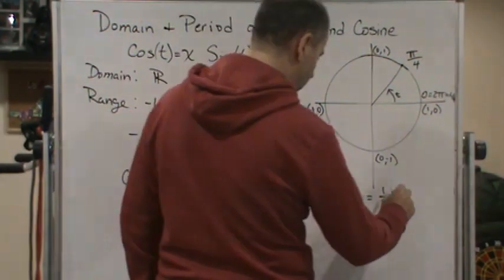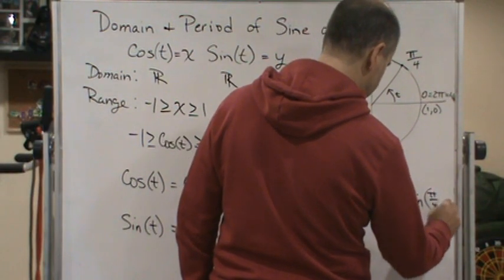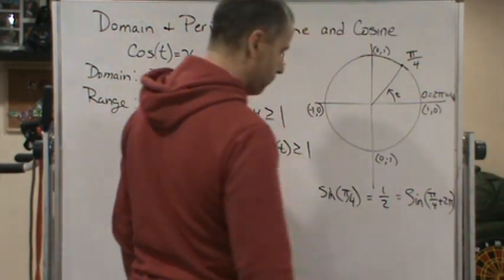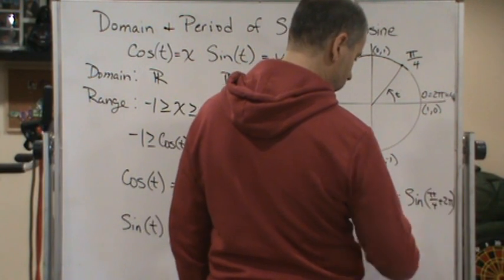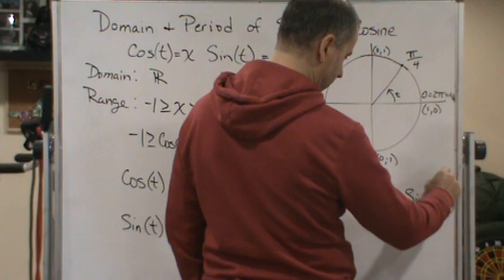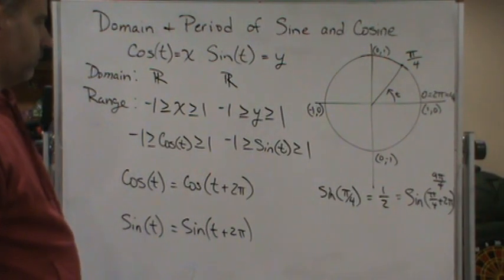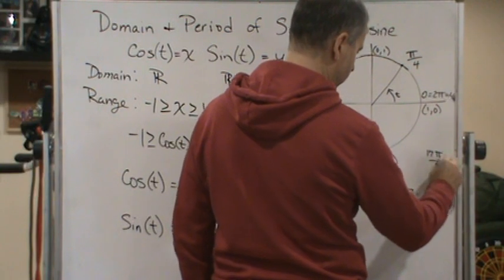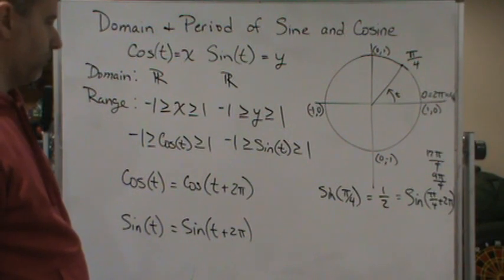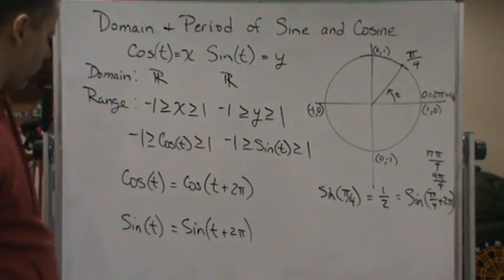Okay, but that's also going to be equal to sine of π over 4 plus 2π, which is the same as 9π over 4, right? And then I can go another revolution, which is going to bring me to 17π over 4. And so I get this relationship here, and the same relationship holds for cosine.